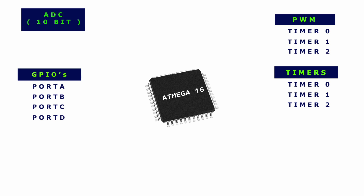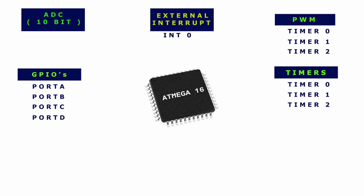We have a total of three external hardware interrupts — INT0, INT1, and INT2 — through which interrupts can be triggered from an external source to the microcontroller.